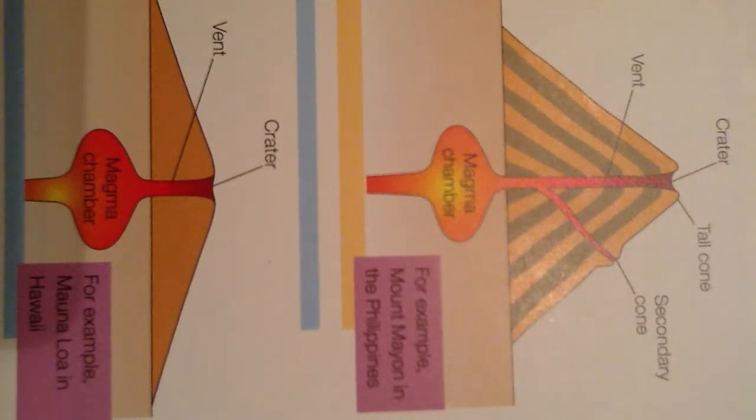Composite volcanoes have steep sides created by alternate layers of lava and ash. The lava is also sticky so it only travels a short distance. The lava is also acidic.